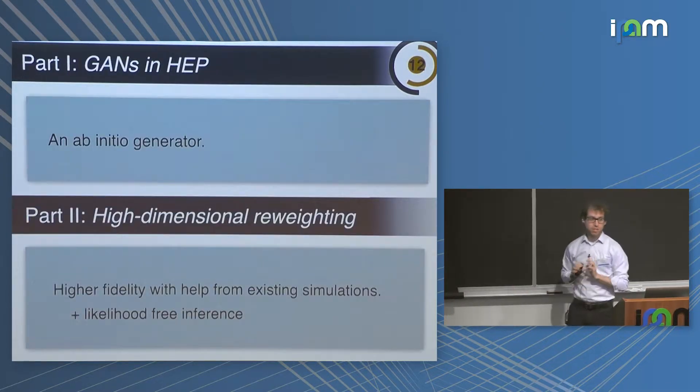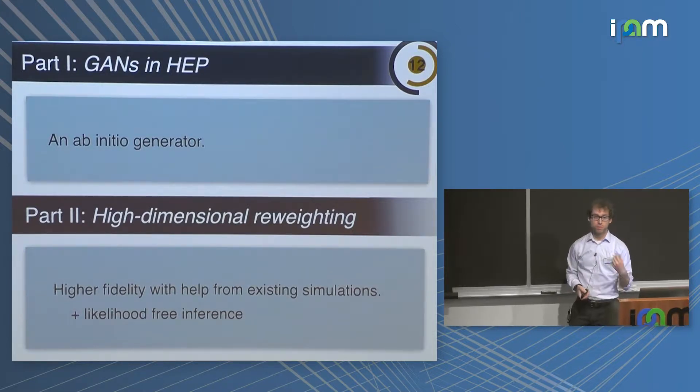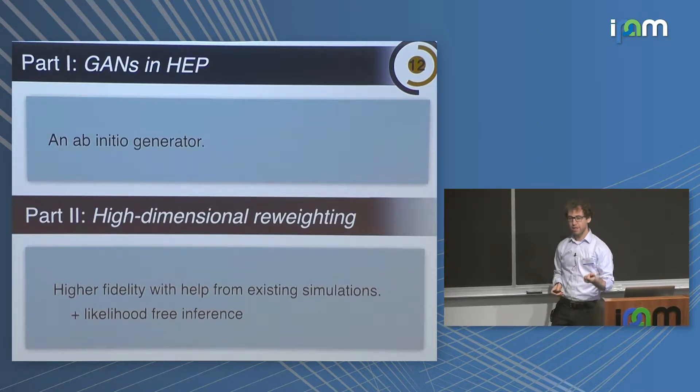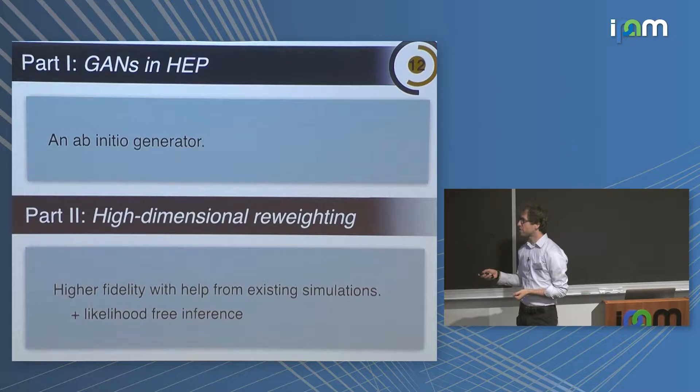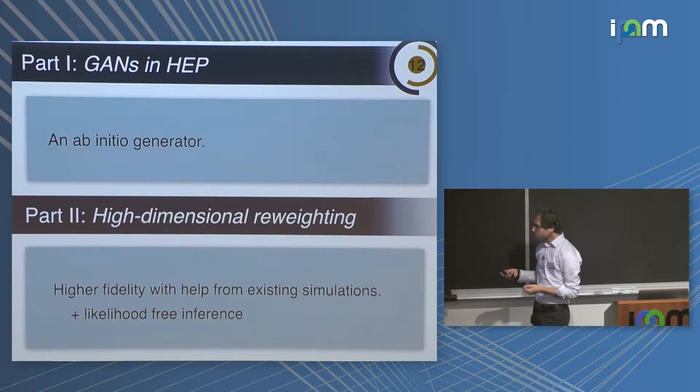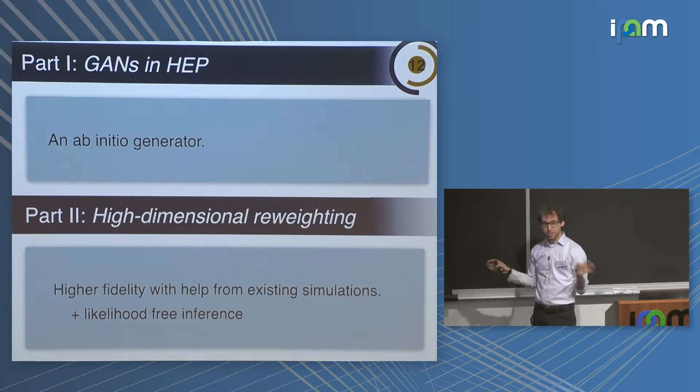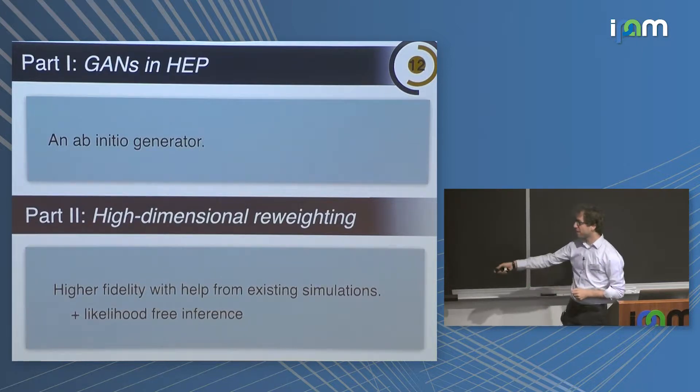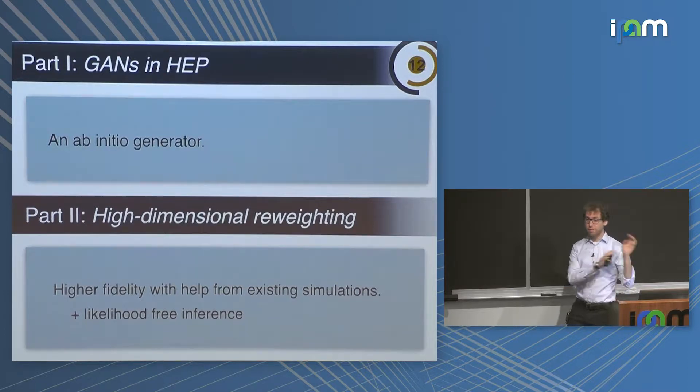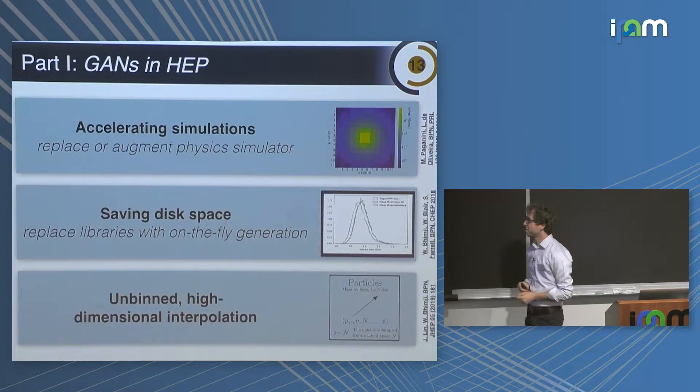So there's going to be two parts of this talk. First, I'm going to talk about GANs as an ab initio generator, a way to generate new events in the context of accelerating simulation. And then I'll discuss high-dimensional reweighting, which we thought of as another way of doing generation. I'm going to talk about reweighting without having probability distribution functions, so it's still likelihood-free.